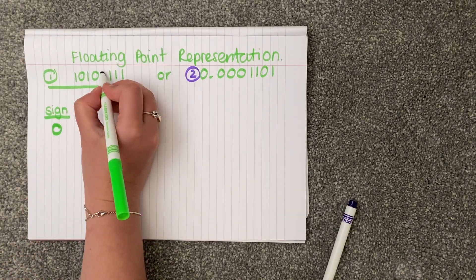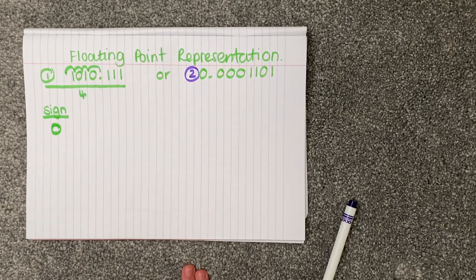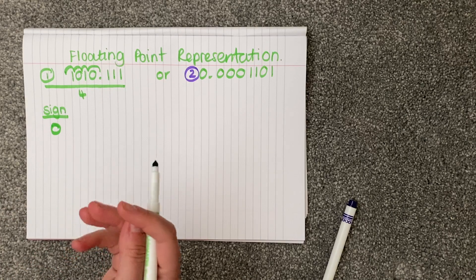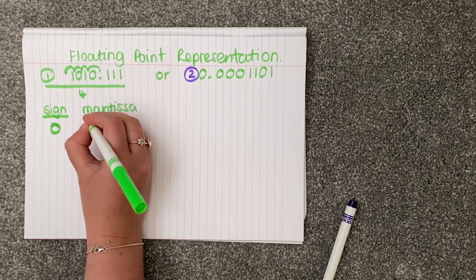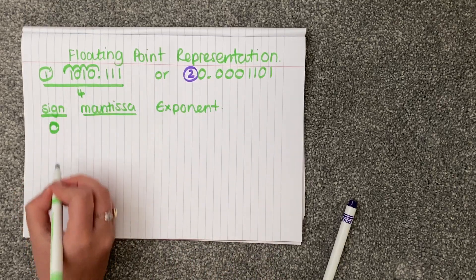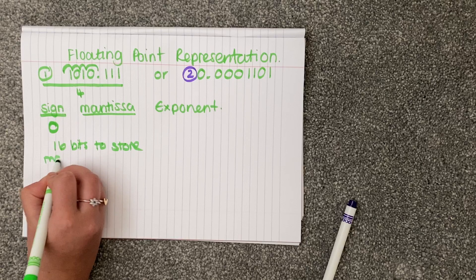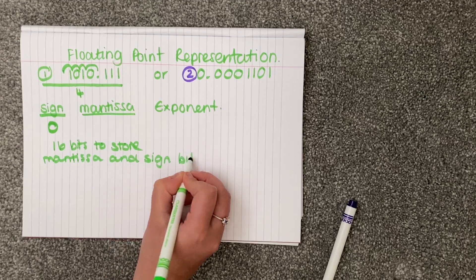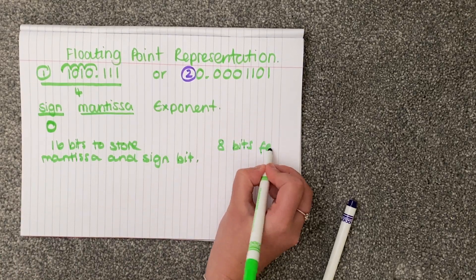We then go on and we check: how far do we move this number? We move it four positions. If we were asked in the question — because you're usually asked within the question — how many bits you can store your mantissa in. So here we go: mantissa and then exponent. So if we were saying 16 bits to store mantissa and sign bit — you would be told this in the question, it's not something you have to figure out — and then you do eight bits for exponent.